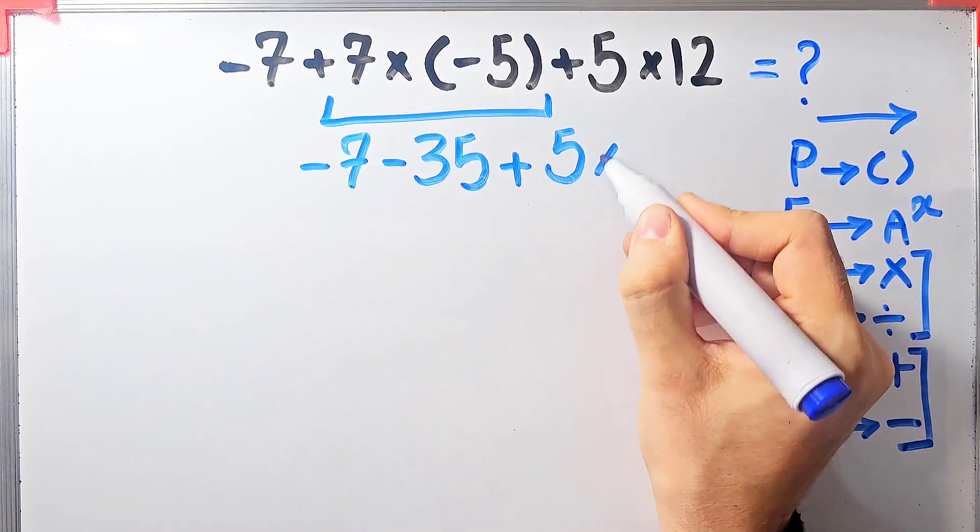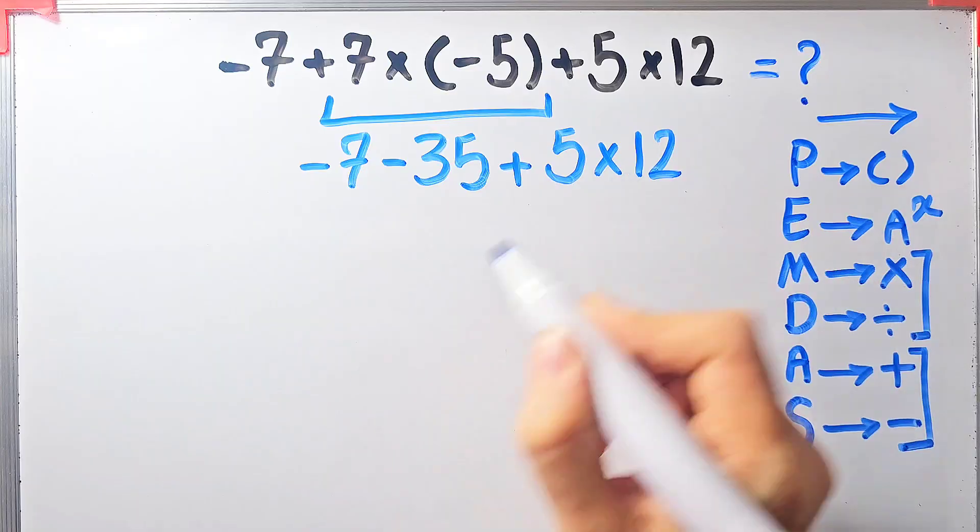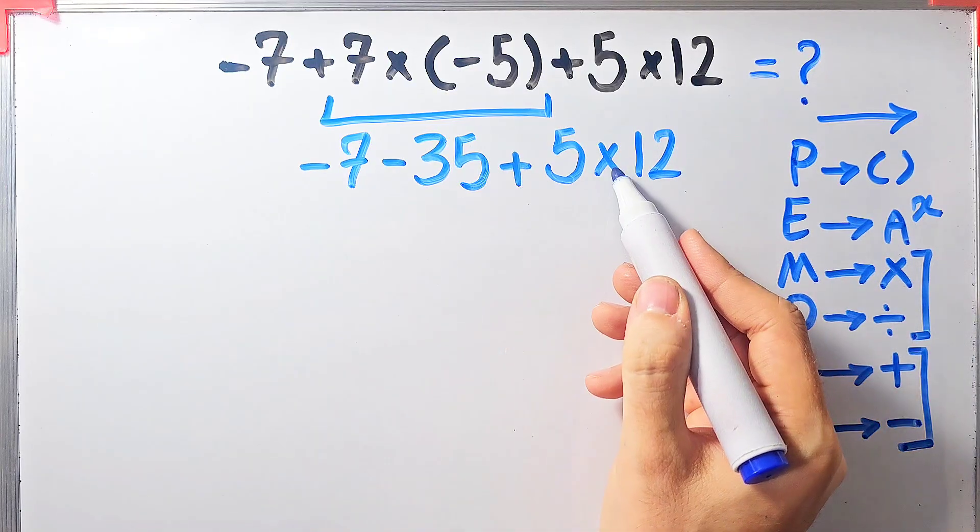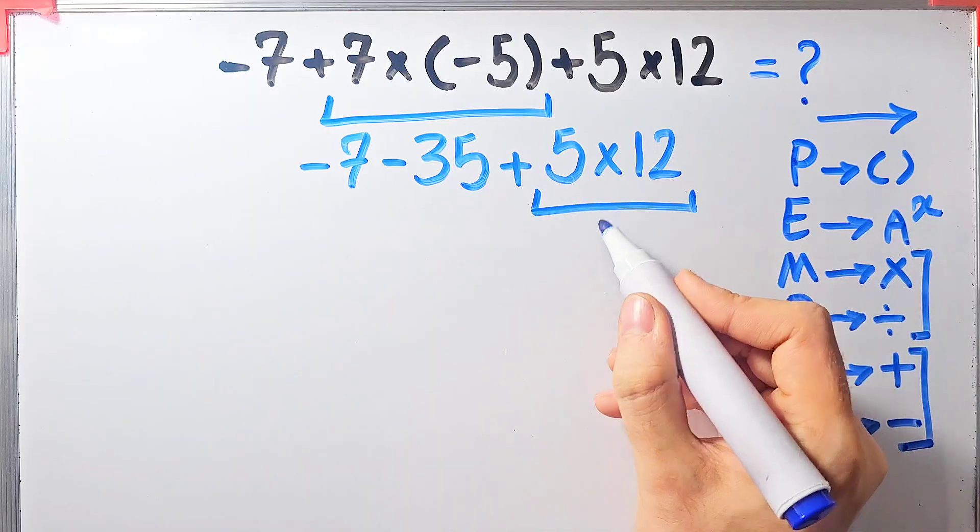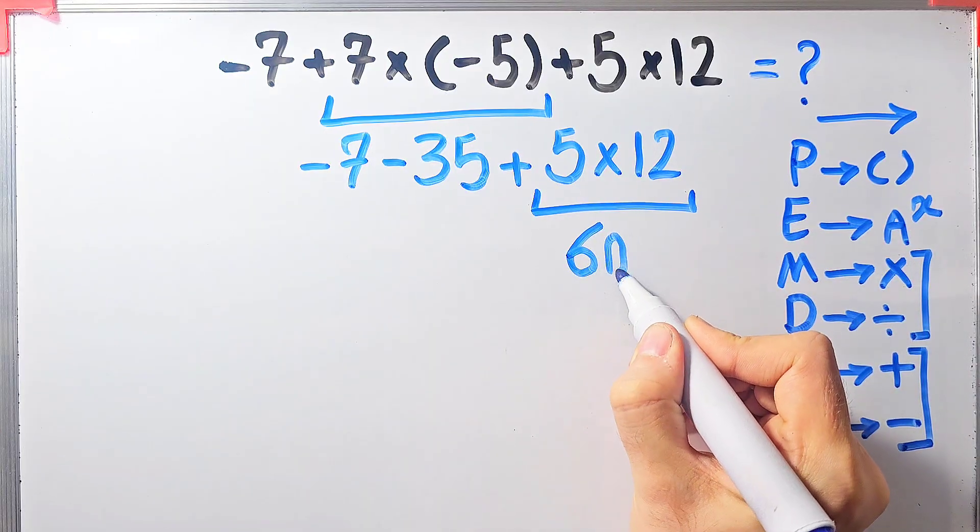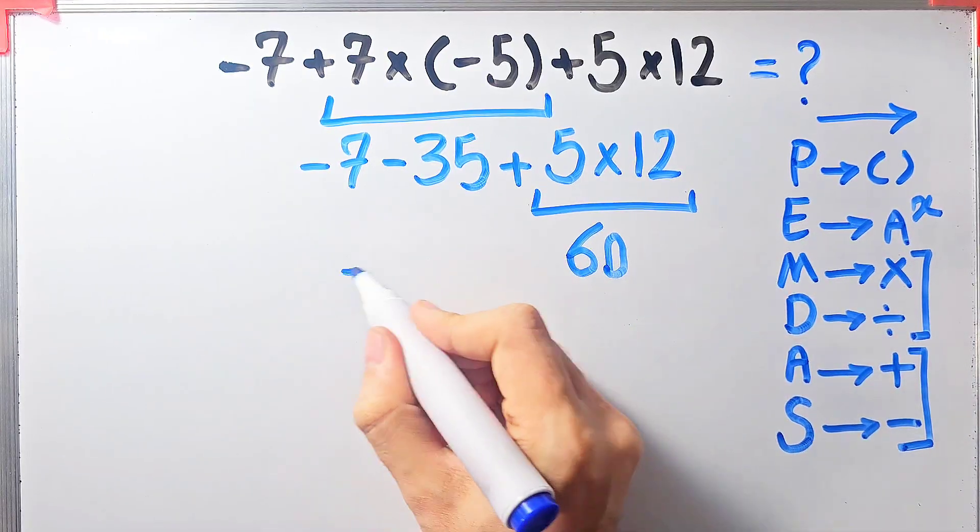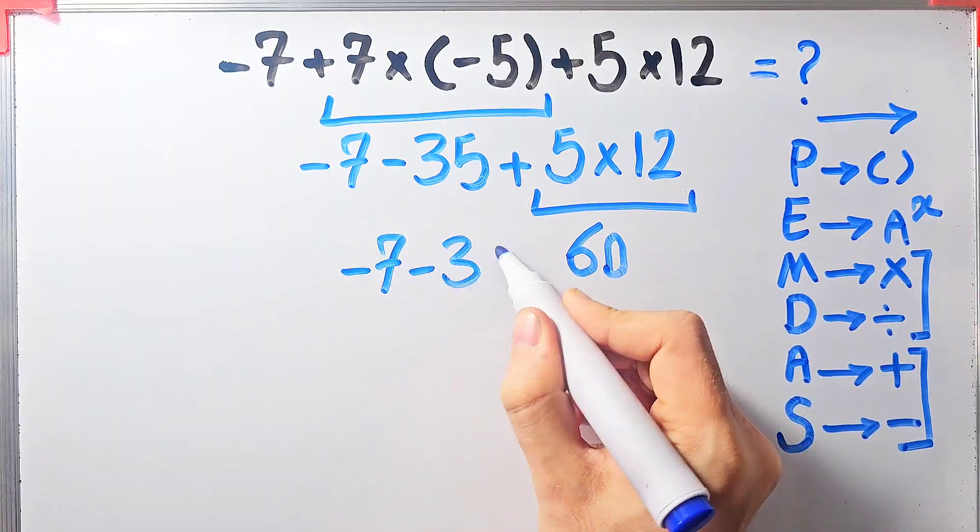Now we have subtraction, addition, and multiplication. First we do this multiplication: five times twelve. Five times twelve equals sixty. Now we have negative seven minus thirty-five then plus sixty.